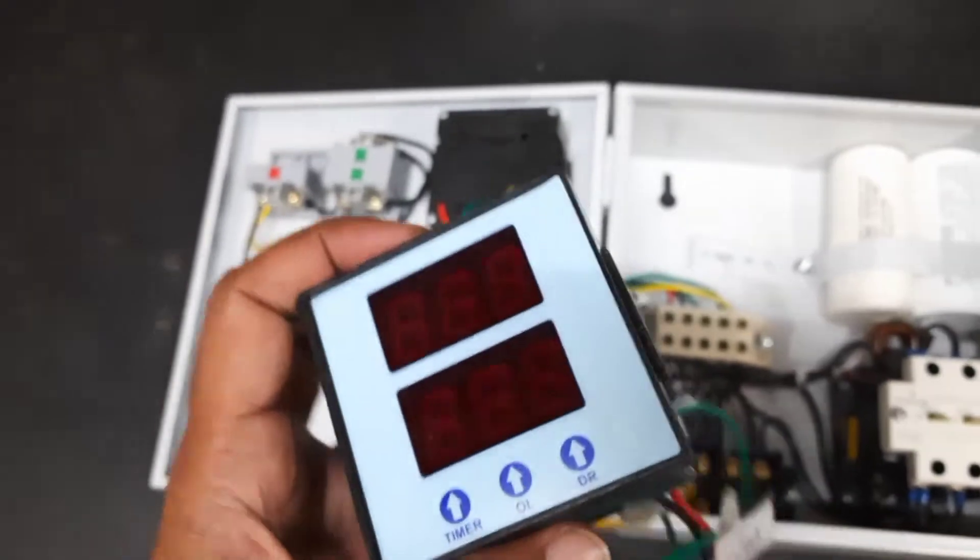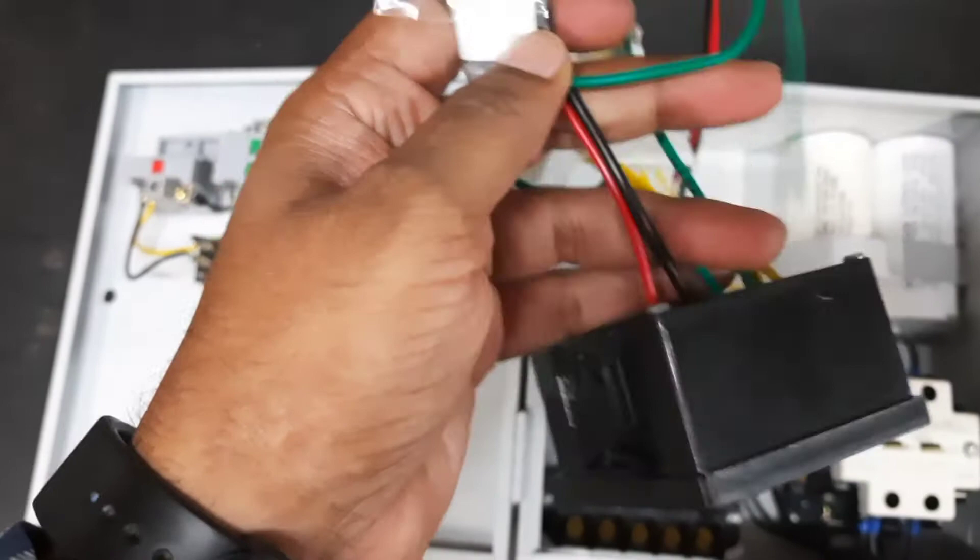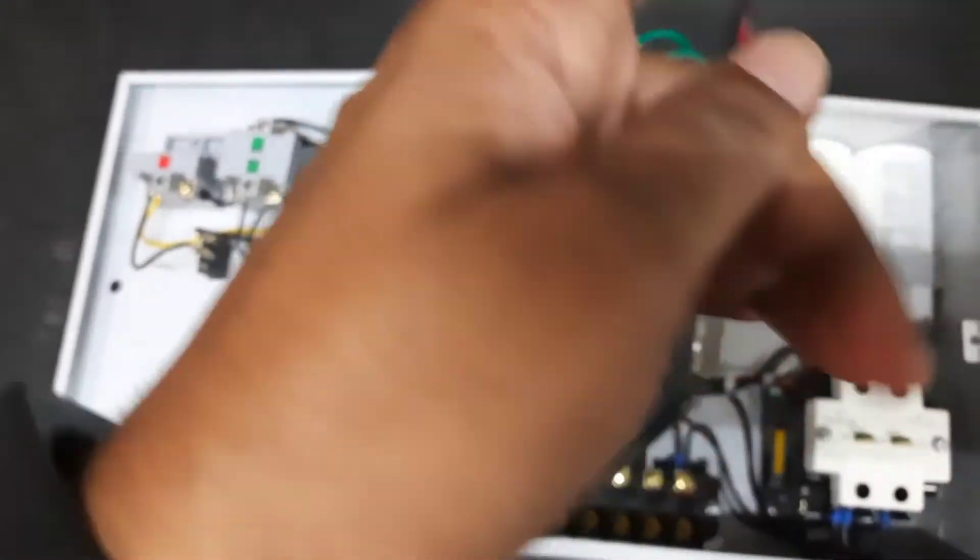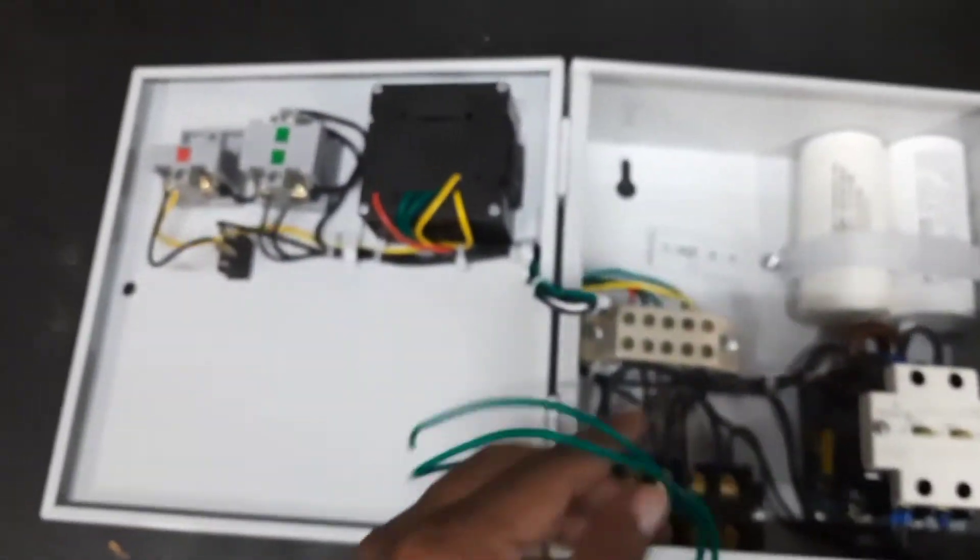Now we'll connect this digital meter with the control panel. Red and black are phase and neutral. The green wires are connected with the CT coil.